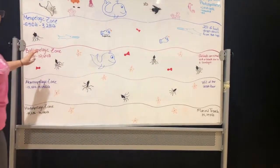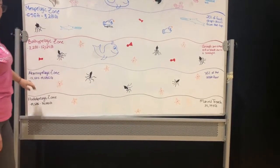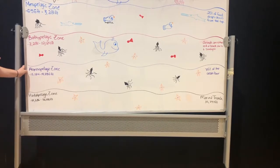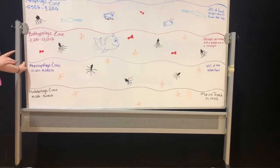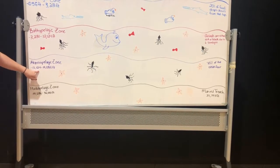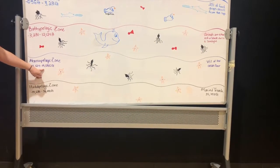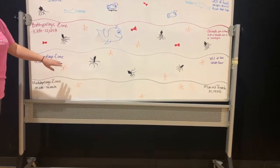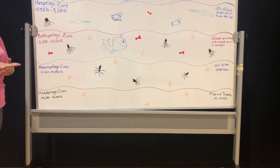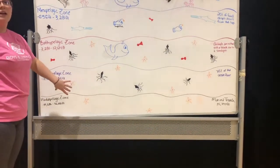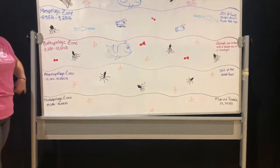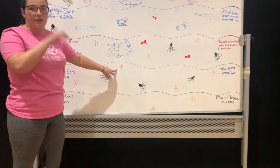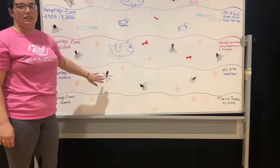And we're gonna move on to our fourth layer — this one is the abyssopelagic zone. This is at negative 13,124 feet to 19,686 feet. Down here this is also called the midnight zone because there's absolutely no light down here, and the pressure is so high that only invertebrates can live down here, so we're going to have our squid and our starfish. This layer also holds 75% of the ocean floor.